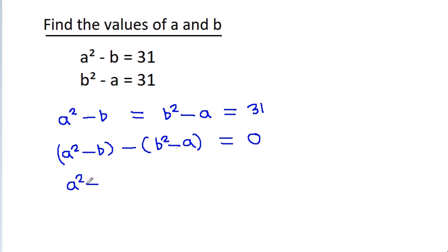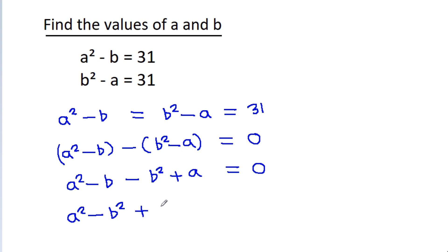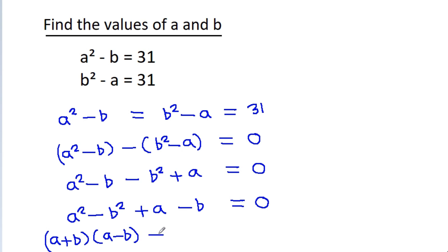Expanding, we get a squared minus b minus b squared plus a is equal to 0, which is a squared minus b squared plus a minus b equals 0. And a squared minus b squared factors as (a plus b)(a minus b), so we have (a plus b)(a minus b) plus (a minus b) equals 0.